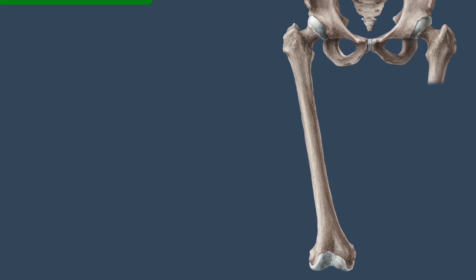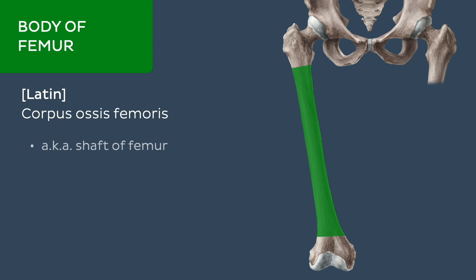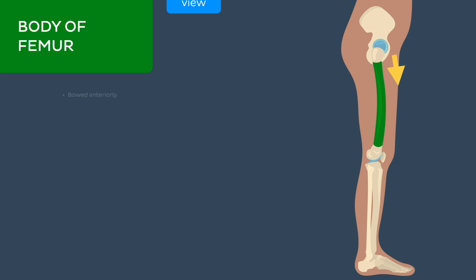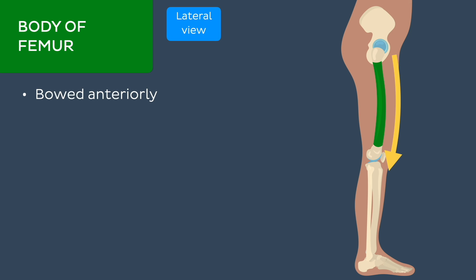The body of the femur, also known as the shaft of the femur, is bowed anteriorly, which contributes to its weight-bearing capacity.